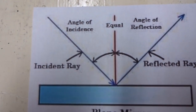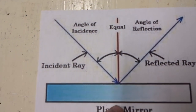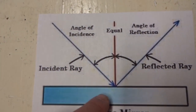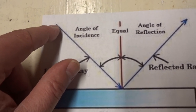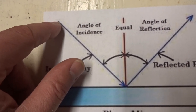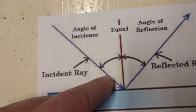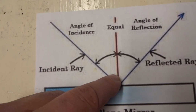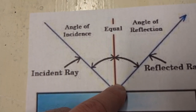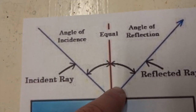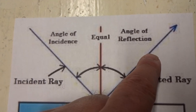We see reflection in this diagram. Here we have the mirror. The original light beam is called the incident ray. Here we have the equatorial plane, and the reflected light is at the angle of reflection.